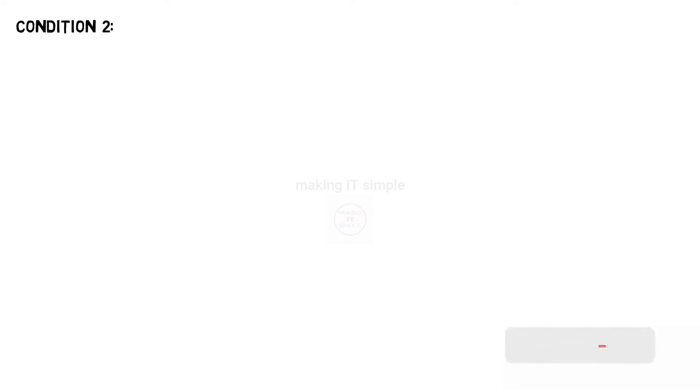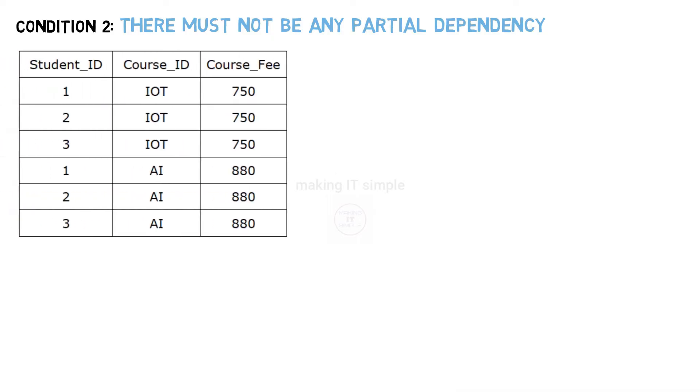Second condition is there must not be any partial dependency. Let us understand this also with an example. Let us consider this table. To check whether there is a partial dependency in a table, first thing you need to identify is candidate key.